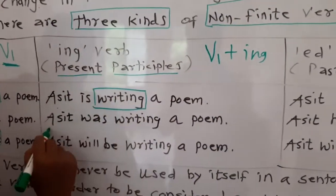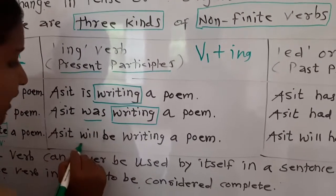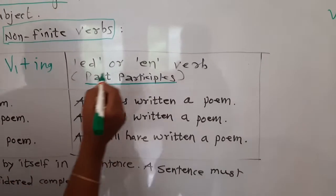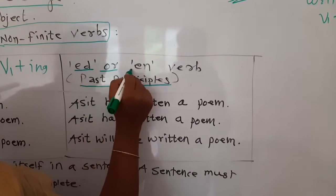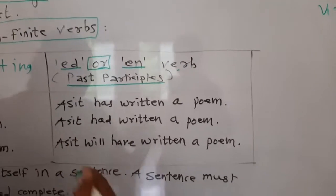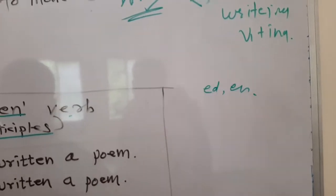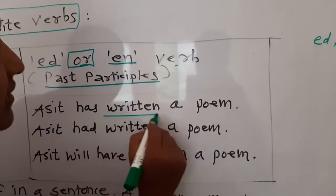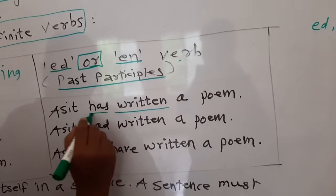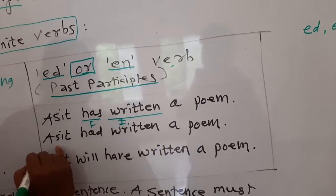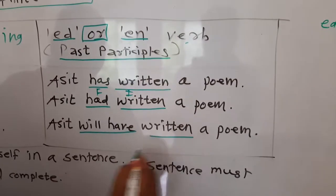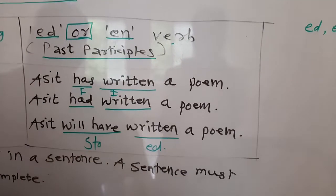Now the past participle — that is ED or EN form. When we see the forms of verbs as V1, V2, V3, the V3 form carries ED or EN. For example: 'Asit has written' — 'has' is the finite verb and 'written' is the non-finite verb, the past participle. Similarly: 'Asit had written,' 'Asit will have written.' If the verb is regular like 'stop,' we add ED to form the non-finite verb.